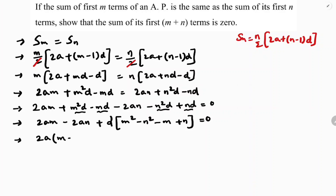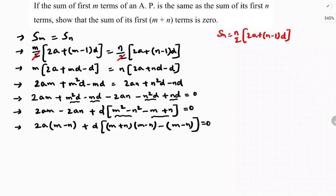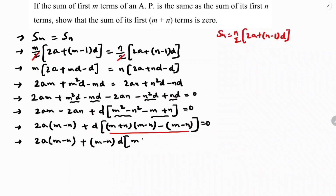Taking 2A common from the first pair: 2A into m minus n. For the D terms: m squared minus n squared can be written as m plus n into m minus n. In the remaining two terms, taking minus common gives minus of m minus n. So we have D into m plus n minus 1 left after factoring.